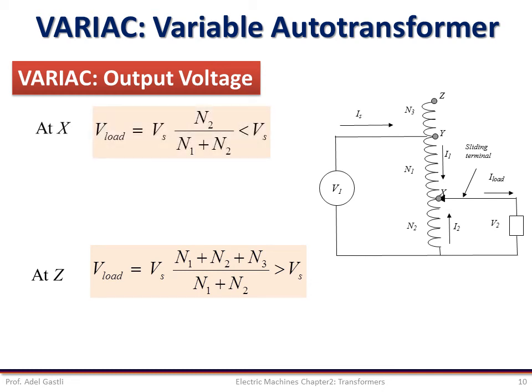If the secondary taps at point X, the load voltage can be expressed as the source voltage multiplied by the ratio of N2 divided by N1 plus N2. In this case, the load voltage is smaller than the source voltage, while if the secondary taps at point Y, the load voltage equals the source voltage.